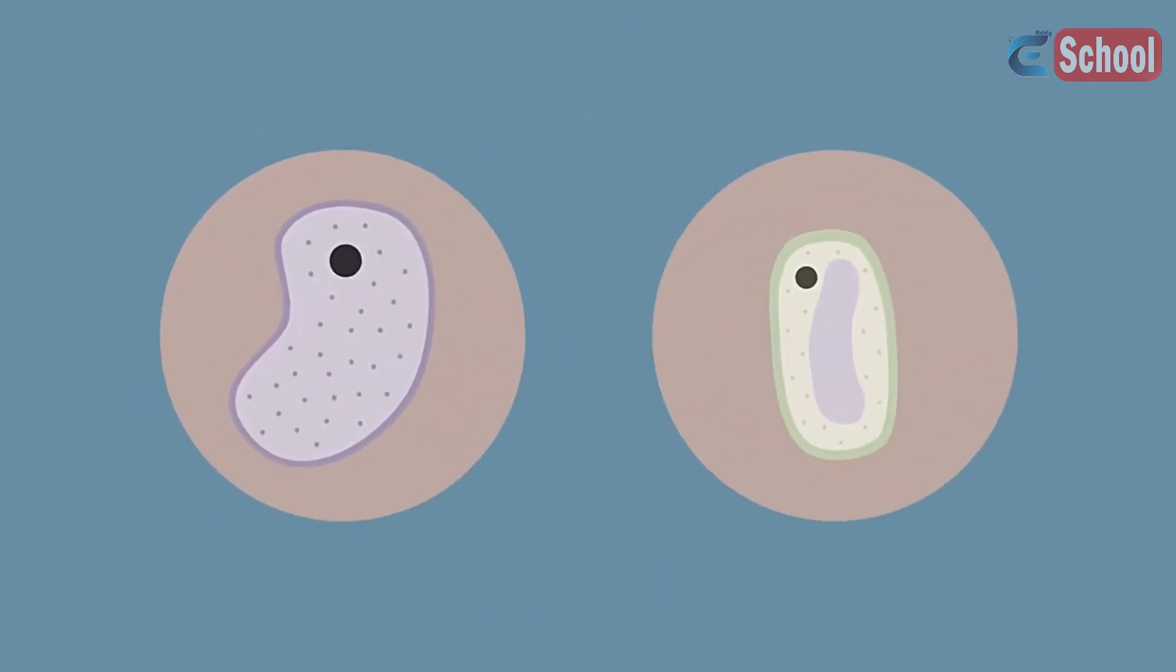Osmosis out of a cell can cause big changes. Animal cells shrivel up and in plant cells the membrane and cytoplasm shrink away from the cell wall, causing the cell to become flaccid.